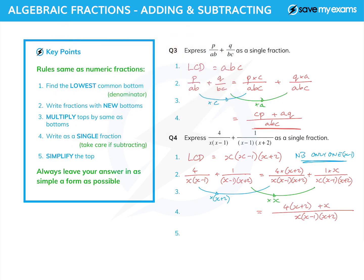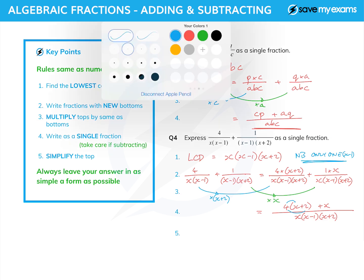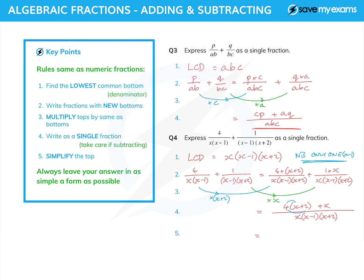Now I've got a little simplification to do. Four times x plus 2 gives 4x plus 8, and the other x gives plus x, so combining: 4x plus x is 5x, and four times 2 is plus 8. So the answer is 5x plus 8 over x(x minus 1)(x plus 2). If you hadn't chosen the simplest lowest common denominator, you'd have more of a mess and some cancelling to do, so it really pays to find the lowest common denominator before you start.